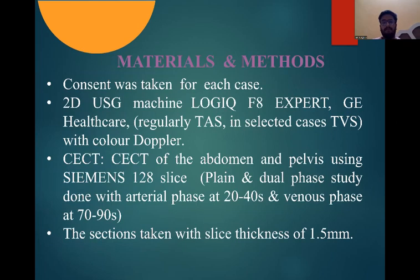Materials and methods: consent was taken for each case. A 2D ultrasonography machine — Logic IQ Expert GE Healthcare — with color Doppler was used. CECT of the abdomen and pelvis using a 128-slice scanner with dual phase study was done with arterial phase at 20 to 40 seconds and venous phase at 70 to 90 seconds. Section thickness of 1.5 mm was used.